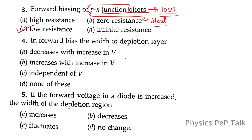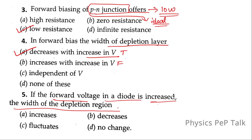In forward bias, the width of the depletion region decreases. So in forward bias condition, the depletion region decreases with increase in voltage V — this is true. Increase with increase in V is false. So option A, decreases with increase in V, is the correct answer. Similarly, the next question asks: if the forward voltage in a diode is increased, the width of the depletion region — in forward bias, as voltage increases, the depletion region decreases. So option B is the correct answer.